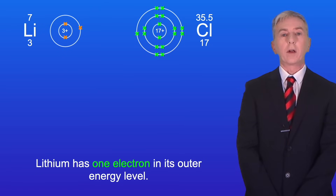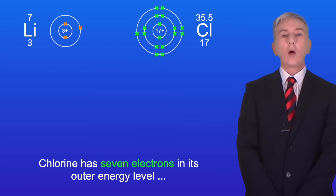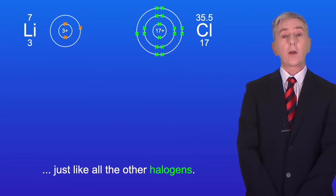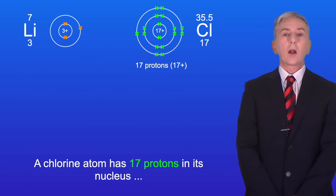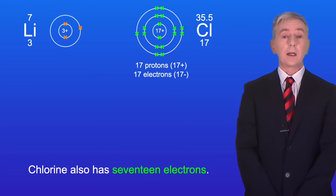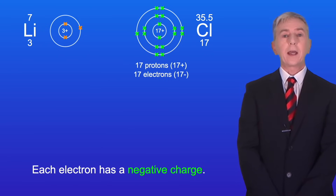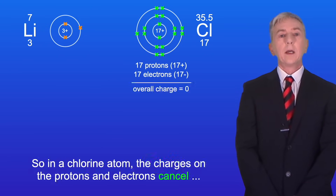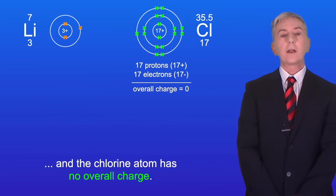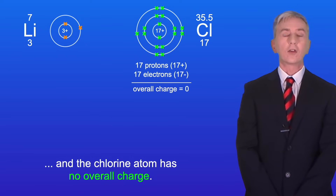Lithium has one electron in its outer energy level and chlorine has seven electrons in its outer energy level, just like all the other halogens. A chlorine atom has 17 protons in its nucleus and each proton has a positive charge. Chlorine also has 17 electrons and each electron has a negative charge. So in a chlorine atom the charges on the protons and electrons cancel and the chlorine atom has no overall charge.